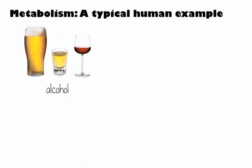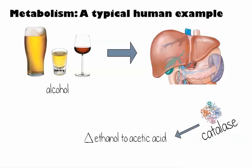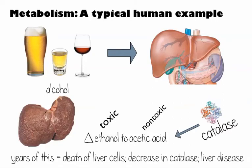We started talking about alcohol and how your body's metabolism takes care of poisons. Metabolism is any reactions that occur in the body. If someone drinks alcohol, their body has to take care of that poison — most of that takes place in the liver. The alcohol ends up in your liver, where an enzyme called catalase, which is a protein, breaks down ethanol into acetic acid. Ethanol is toxic; acetic acid is non-toxic. Years of this causes liver cells to die, decreasing catalase and leading to liver disease.